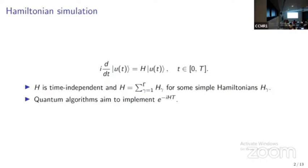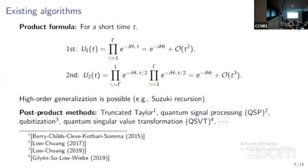The Hamiltonian simulation problem is probably one of the most promising applications of quantum computers, and there are already many existing powerful and efficient quantum algorithms for it. Very roughly speaking, all existing algorithms can be divided into two categories: the product formula and the so-called post-product methods.